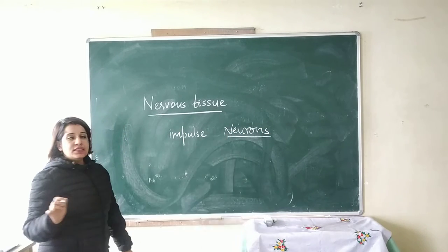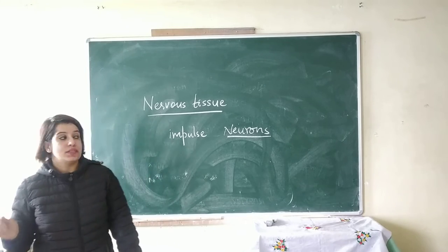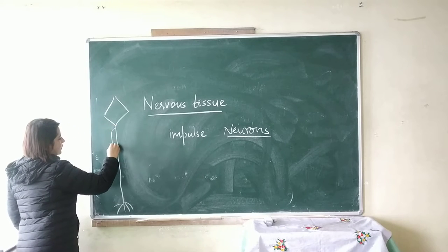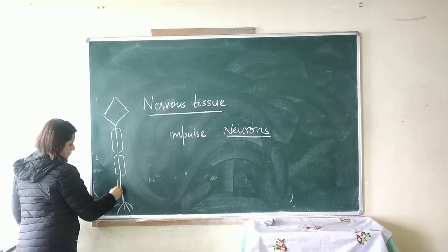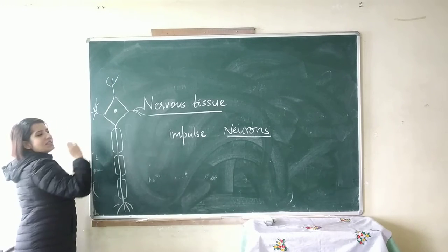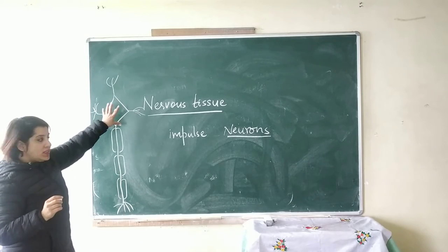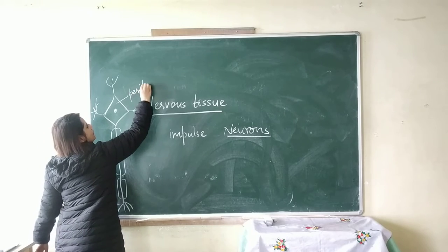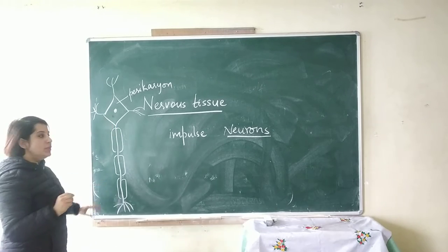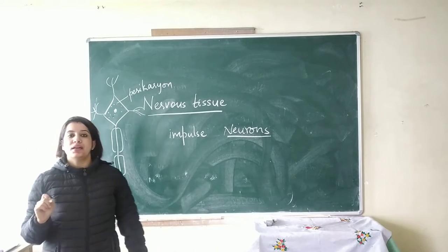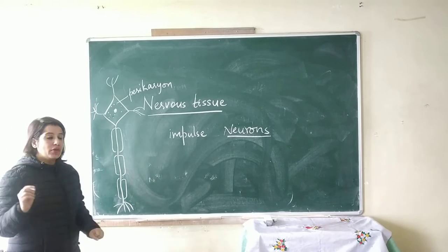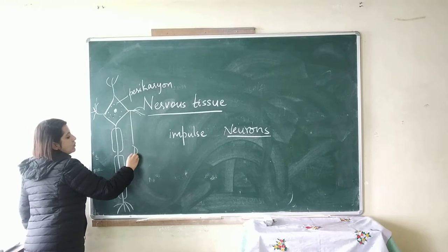The special type of cells that form the nervous tissue are called neurons. A neuron looks something like this. It consists of a cell body known as the pericaryon. The cell body contains a centrally located nucleus which is surrounded by cytoplasm. Various small thread-like structures arise from the pericaryon, and these thread-like structures are known as dendrons.